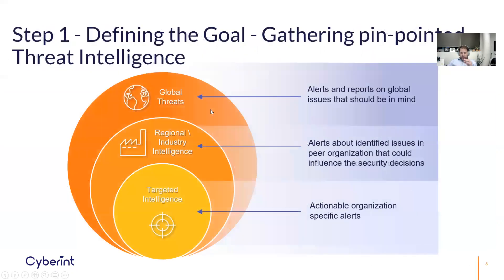Starting with the first step: defining the goal. The goal is firstly to receive pinpointed, gathered intelligence. In the intelligence world, I'll divide it into three layers. The first and most important is the one that is mentioning you specifically — actionable alerts or information. If you fix the issues mentioned there, you can directly improve security. A basic example: if there are leaked credentials of one of your employees, resetting the password would be the quick and immediate remediation. This is targeted intelligence.